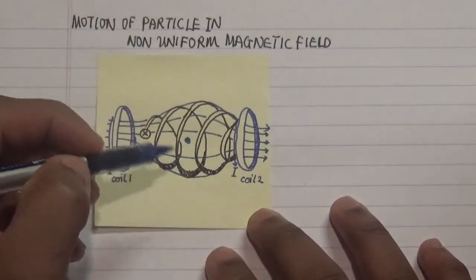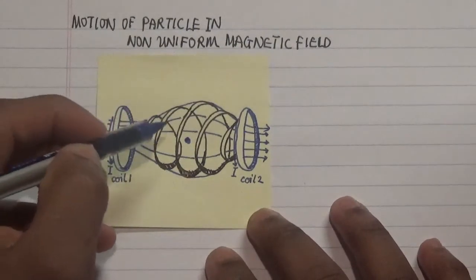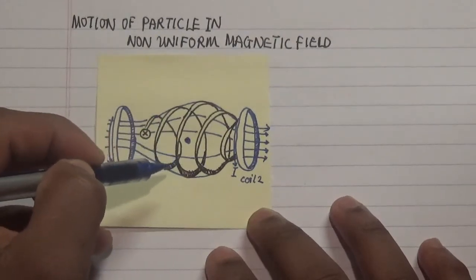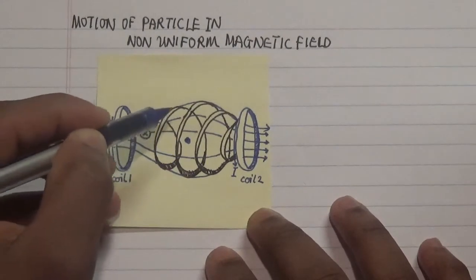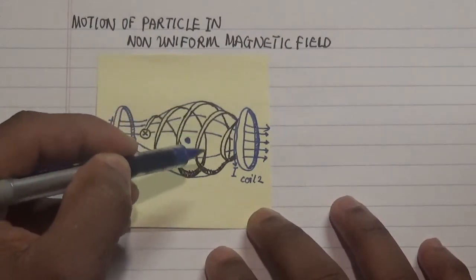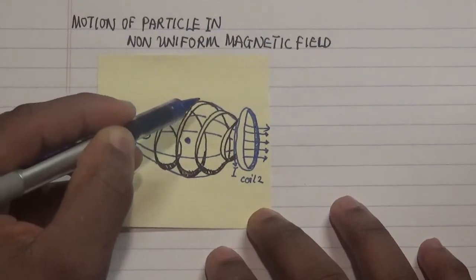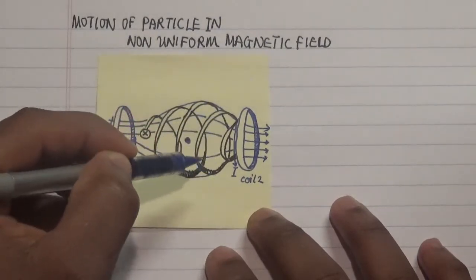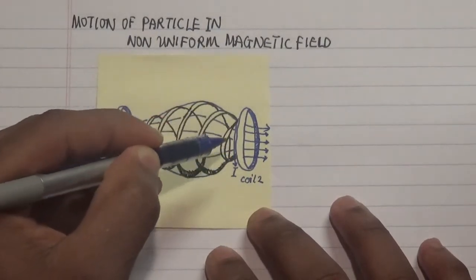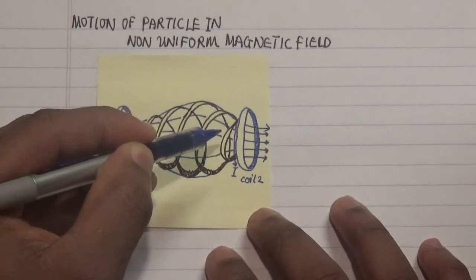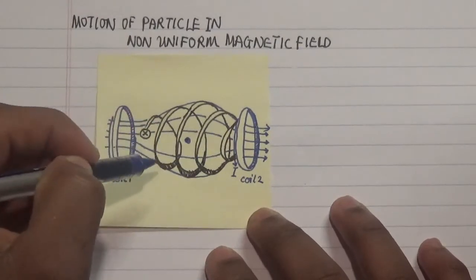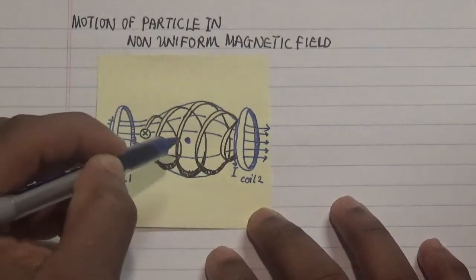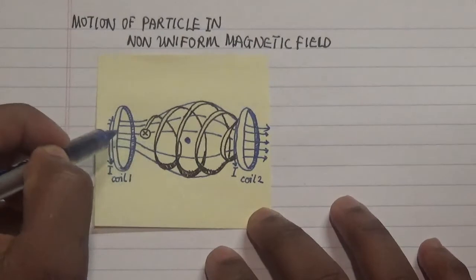We see the particle's motion going in one direction, coiling like a helix, but then it's as if it's about to escape before it comes back to the other side. The motion is a back-and-forth movement.